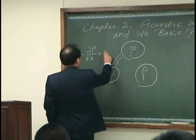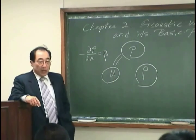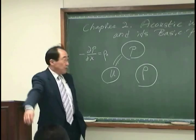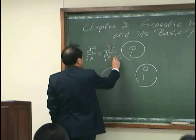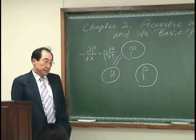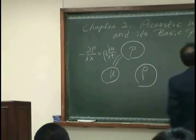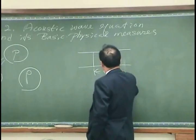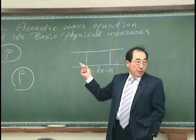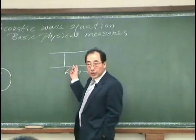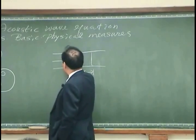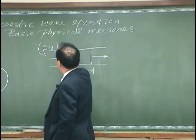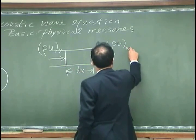So linearizing the momentum balance between two infinitesimal sections, we found that this can be written as like this. So in the last lecture we considered the momentum balance on this fluid element, the momentum coming in and the momentum coming out. So momentum coming in would be rho u at x, momentum coming out is rho u at x plus dx.